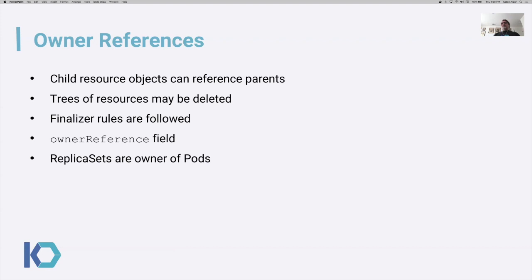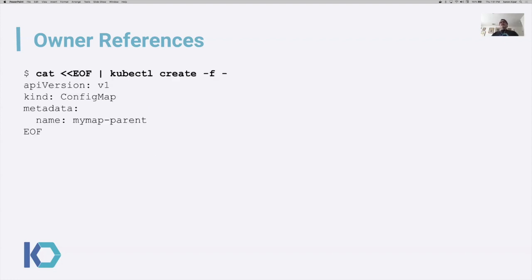That's it for finalizers. Finalizers basically control how a single object is deleted by the controller. Owner references tell how groups of objects are deleted. Owner references are properties on resources that specify the relationship to one another, so entire trees of resources can be deleted. Finalizer rules are processed when there are owner references — so they are somewhat orthogonal in how they work. You've probably already seen these on pods. Pods typically have owner references to the replica sets, so when deployments, stateful sets, or replica sets themselves are deleted, the pods are taken care of in the process.